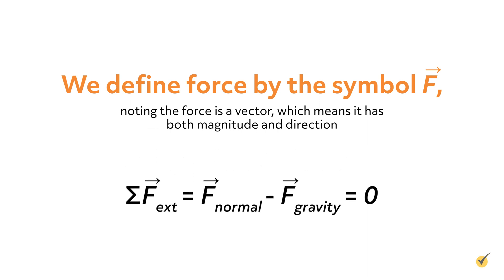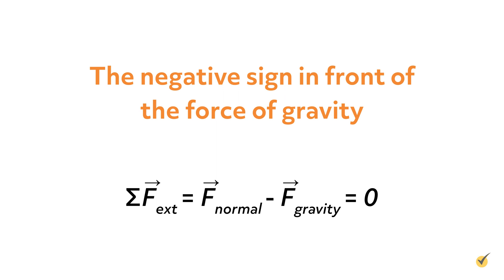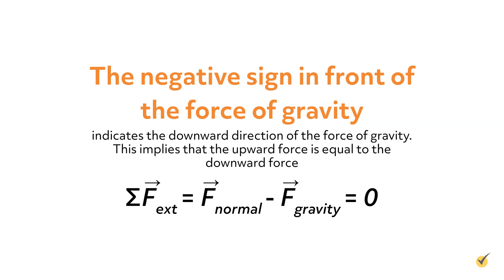By doing this, we can state Newton's first law mathematically as the sum of the external forces is equal to the upward force of the ground on the car minus the downward force of gravity on the car, which is equal to zero. Note that the negative sign in front of the force of gravity indicates the downward direction of the force of gravity. This implies that the upward force is equal to the downward force.